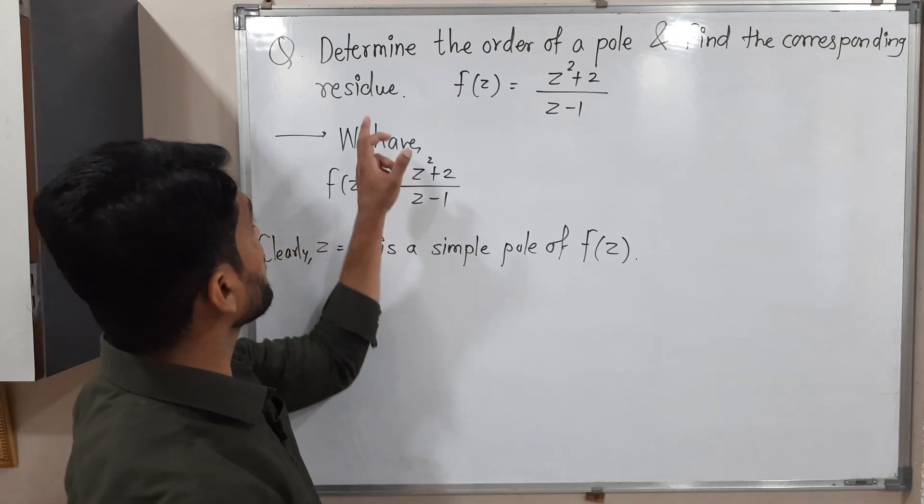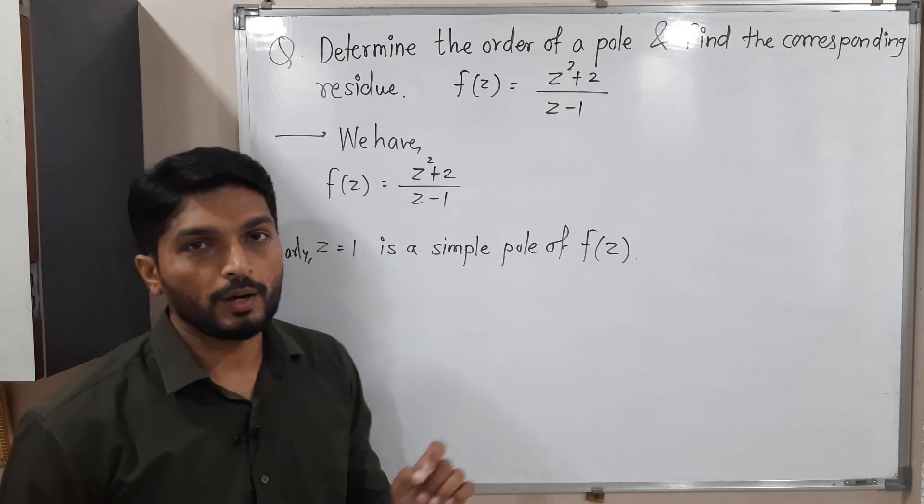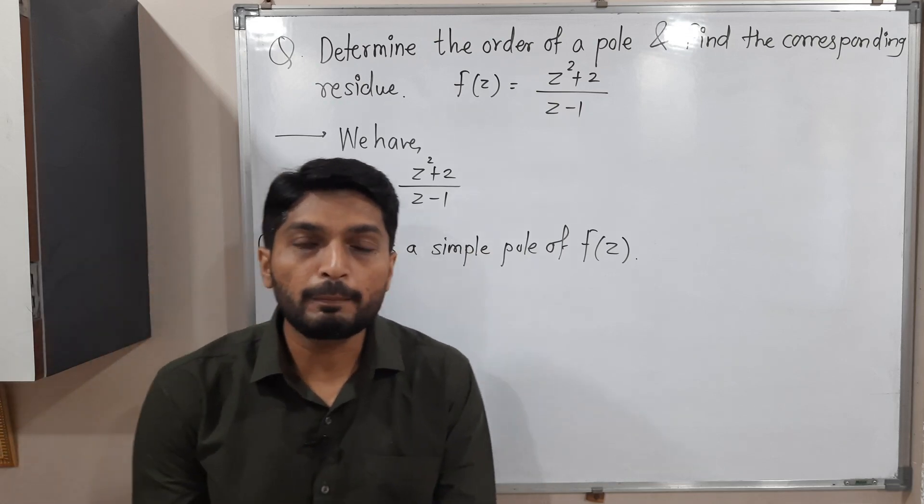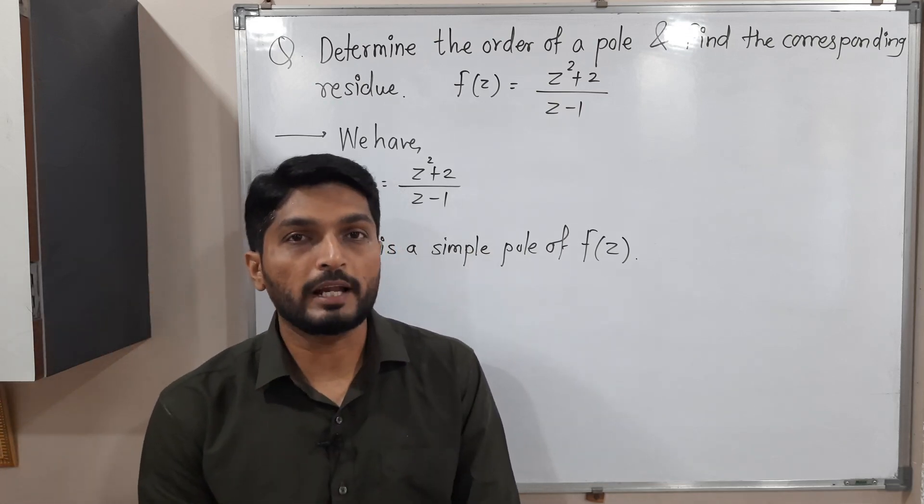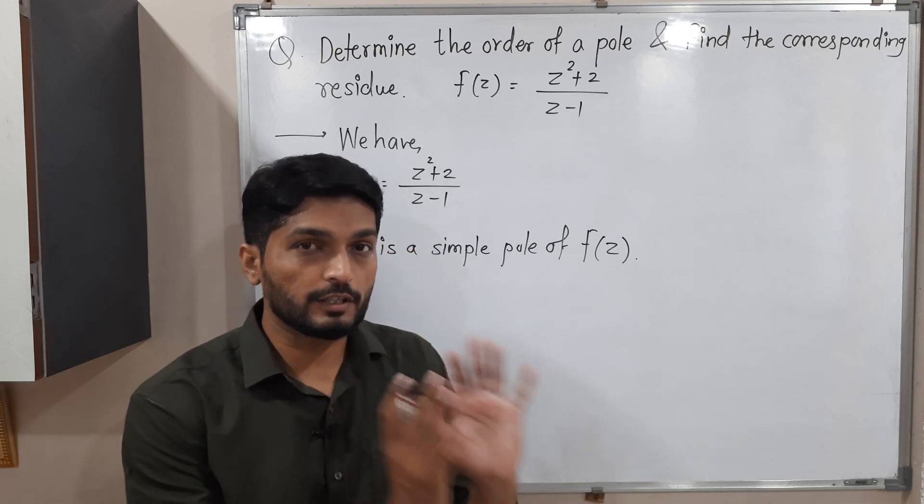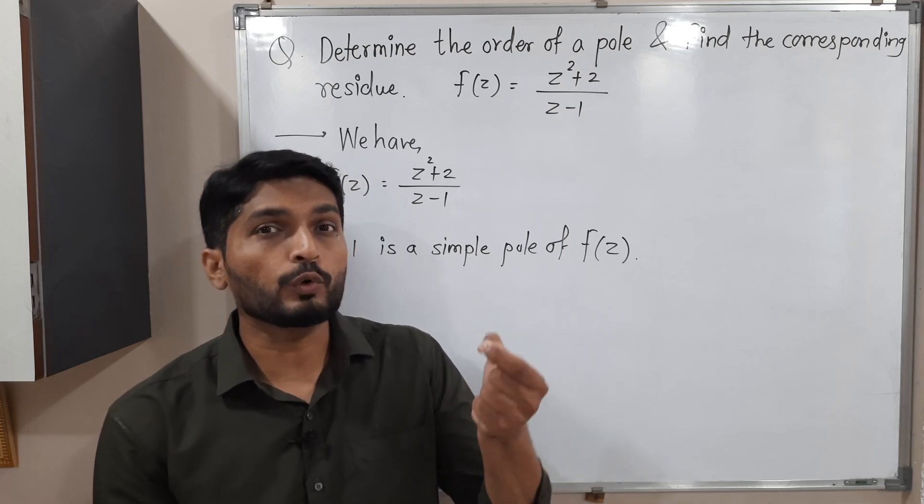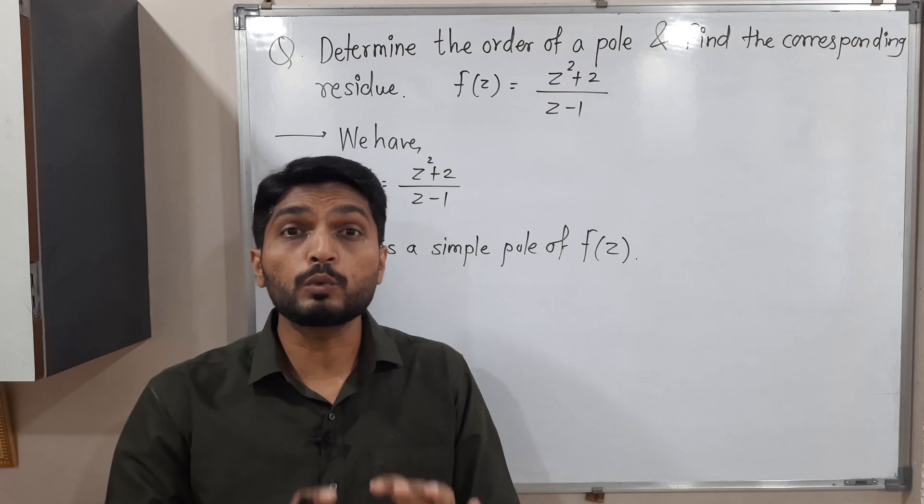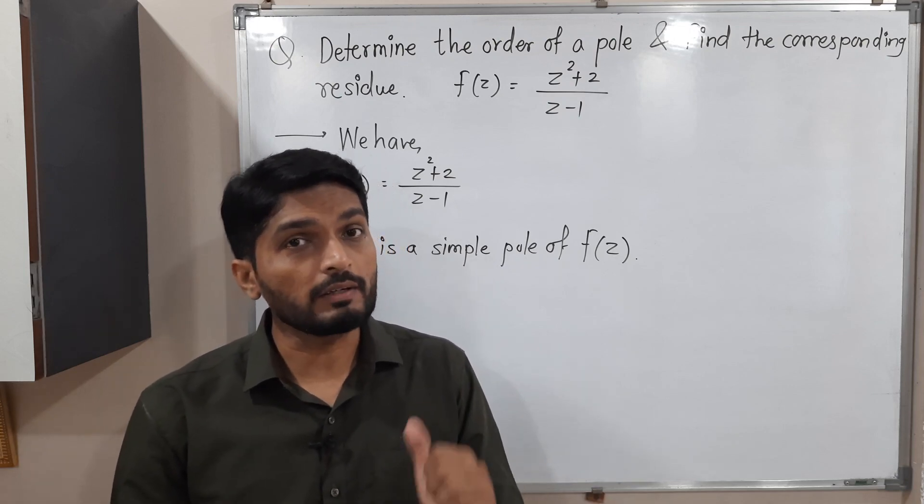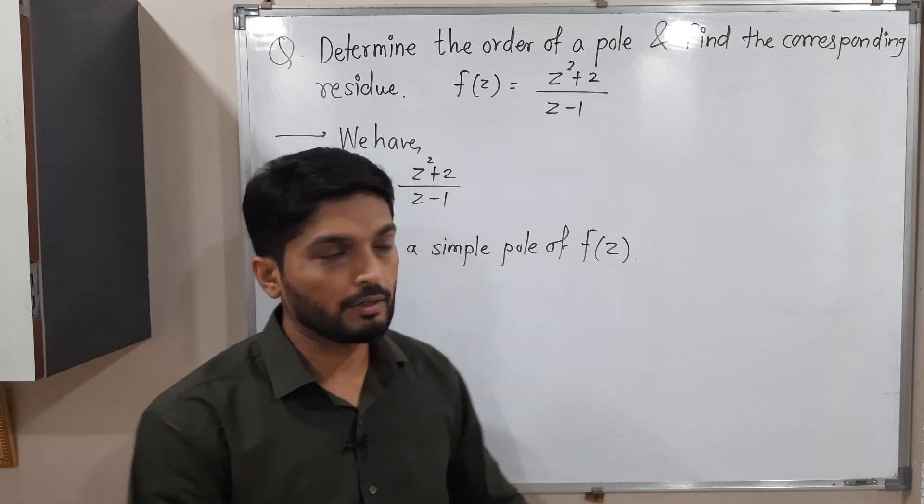After that, we have to calculate residue of f(z) at this pole z = 1. When you have simple pole, we have a very simple formula to calculate residue. Actually, the definition of residue is different. It's B₁, which is coefficient of 1/(z - z₀). But no need to worry about it. Since it is a very simple pole, I am going to use that very simple formula.